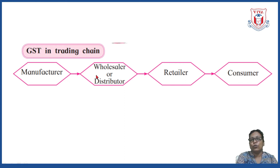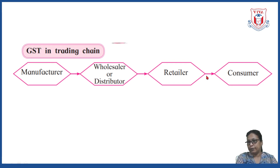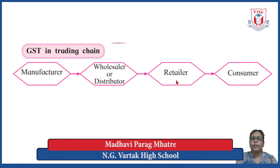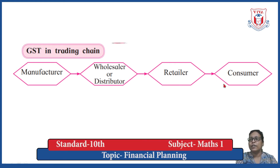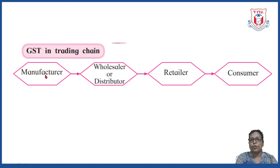From the manufacturer, goods go to the wholesaler or distributor, then to the retailer (the shopkeeper), and finally to the consumer — we, the common people. For example, a grocery shop owner is a retailer; we are consumers purchasing sugar or rice. This is the trading chain, and GST is applicable at every stage.